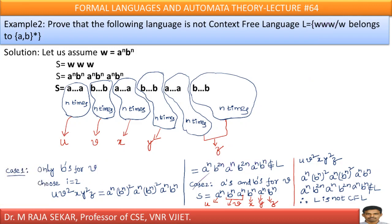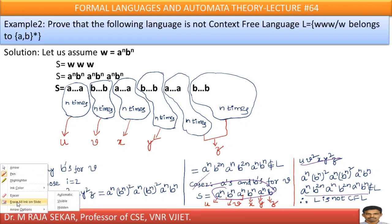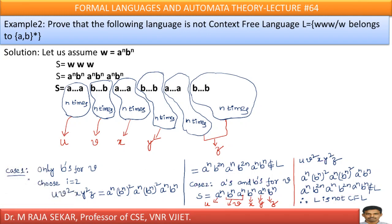Again in case 2, splitting s in some other way and calculating u v^2 x y^2 z, this particular string still does not belong to L. Therefore, I can say our assumption is wrong. Our assumption was that L is a context free language. Therefore, we can conclude that L is not a context free language.